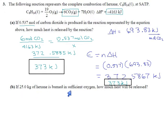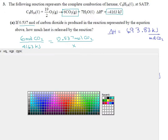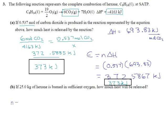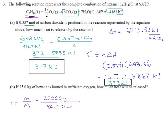Now in part B, same reaction, but now they're not talking about CO2 anymore — they're talking about hexane. They say we have 25 kilograms of hexane, that's like 50 pounds of hexane. We need a number of moles: mass divided by molar mass. The mass is 25,000 grams, because chemistry is mostly about grams. Hexane is C6H14, so its molar mass is 6 times 12.01 for the carbons plus 14 times 1.01 for the hydrogens — 86.2 is the molar mass of hexane. 25,000 divided by 86.2 gives almost exactly 290 moles: 290.0232 moles of hexane.